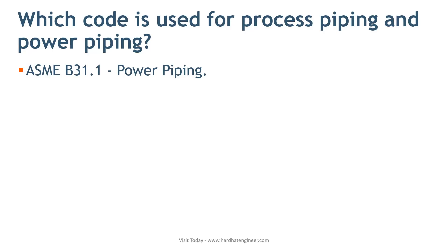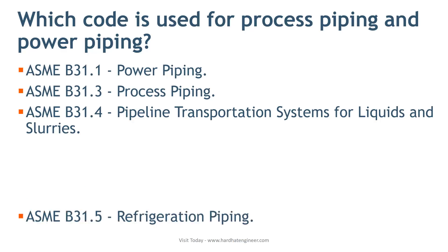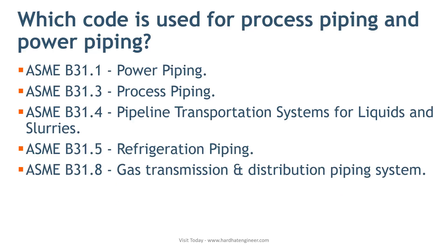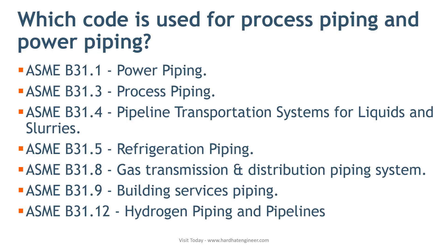The list of codes currently offered by ASME under the B31 series includes: ASME B31.1 — power piping; ASME B31.3 — process piping; ASME B31.4 — pipeline transportation systems for liquids and slurries; ASME B31.5 — refrigeration piping; ASME B31.8 — gas transmission and distribution piping systems; ASME B31.9 — building service piping; and ASME B31.12 — hydrogen piping and pipelines.